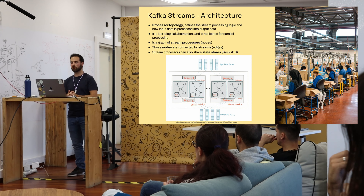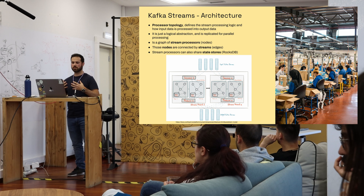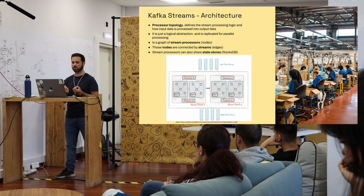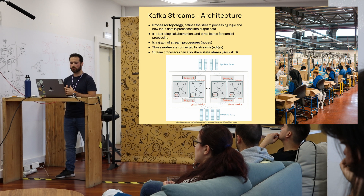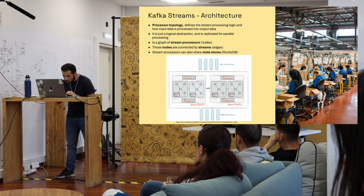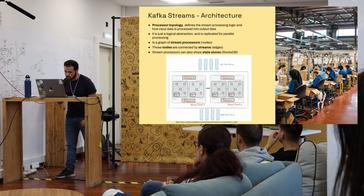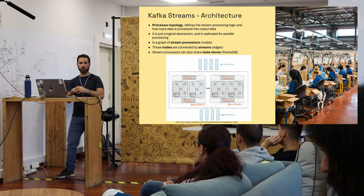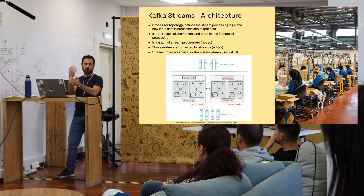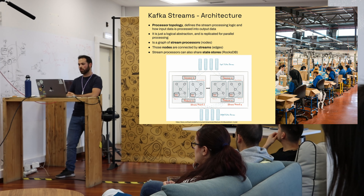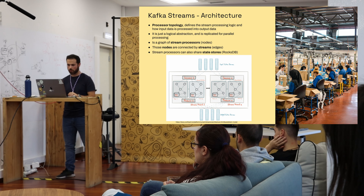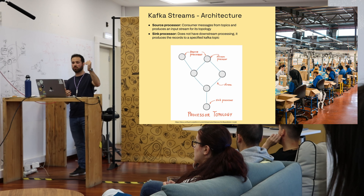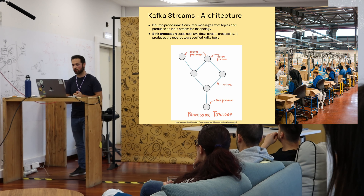In Kafka Streams architecture, you have a processor topology — a graph of stream processors connected by streams. Nodes can have state stores. You can have a bunch of streams consuming from other streams, merging, processing to another stream or another topic, and saving state along the way. The key concepts are source processors (consuming from topics) and sink processors (producing to topics).